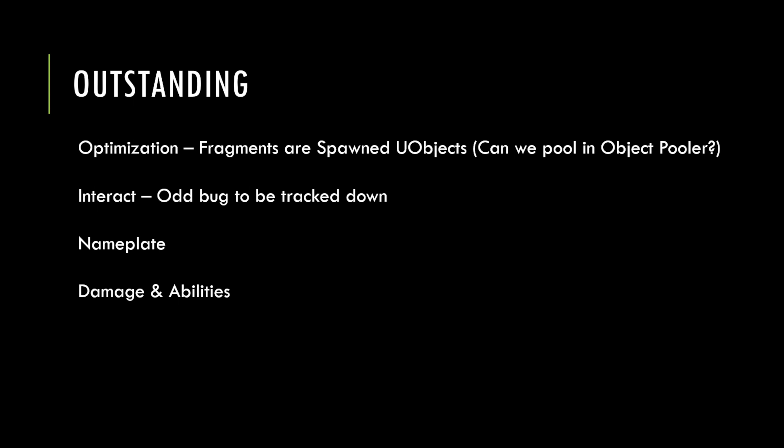You can't have a static function and a virtual function at the same time, so it's requiring us to spawn UObjects for fragments. We're going to look at possibly moving that into the object pooler to save performance. There's also an odd bug in interact which I'll show you in the video.